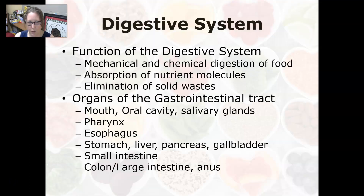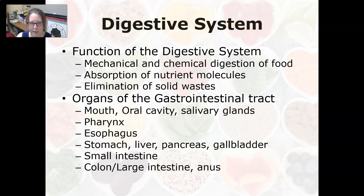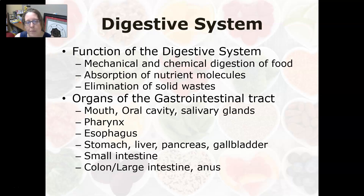Let's start with the function of the digestive system. The function is the mechanical and chemical digestion of food, and then the absorption of the nutrient molecules that come from the digestion of food, and then the elimination of solid waste that were not food or were not nutrients that we needed.